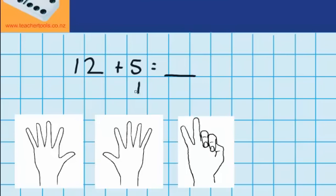Now the question says I need to add five more. Can you think of a quick way that we could do that?